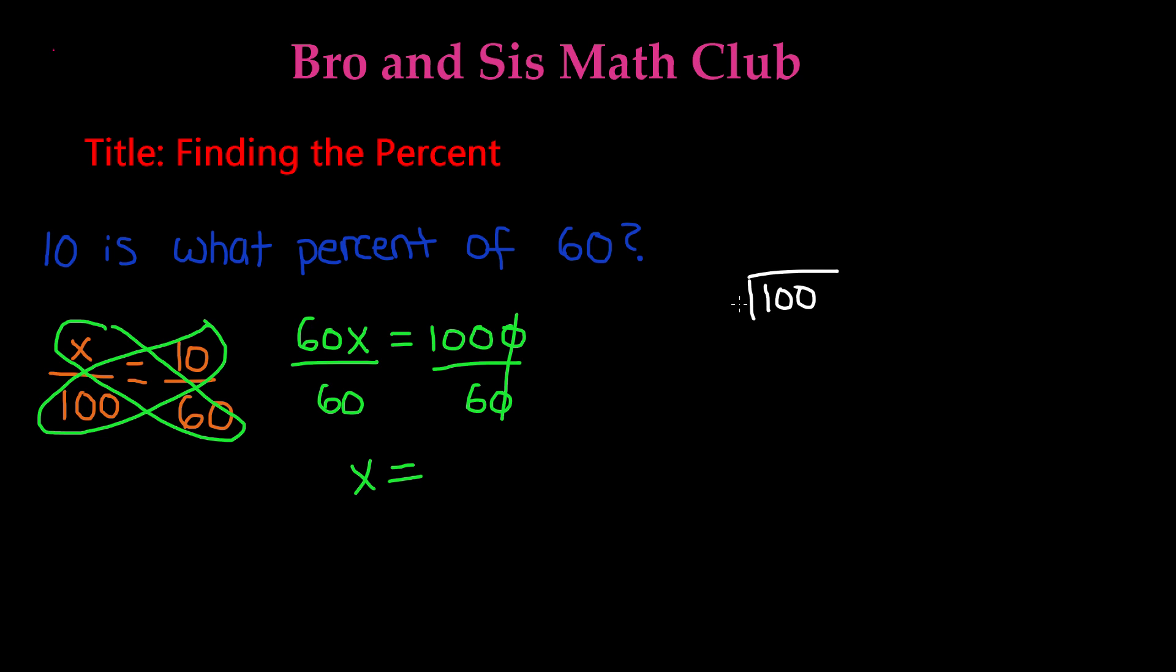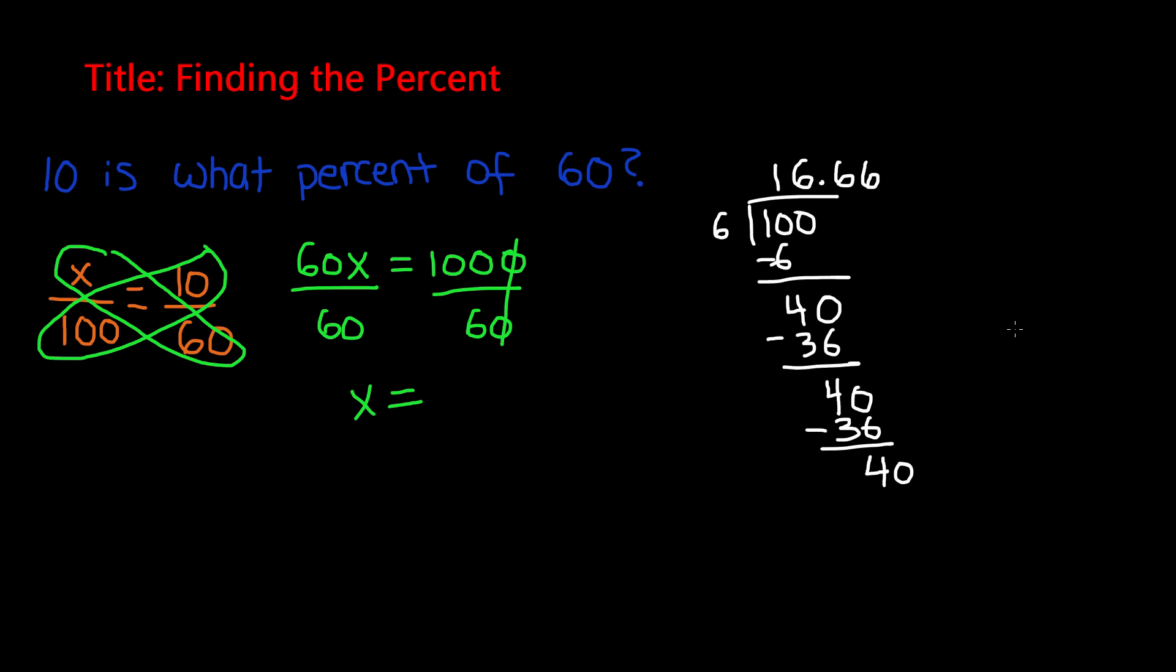100 divided by 6. 6 goes into 10 once. We get 4 and 0. 6 times 6 is 36. And we are left with 4, add a decimal point and a 0. 6 times 6 once again is going to give us 36. And we're going to get another 4. This is going to be repeated decimals. So we are going to get, once again, we have another 0, it's going to get 6 again. And so we get 4, 36, and whatsoever.